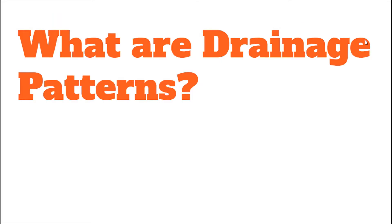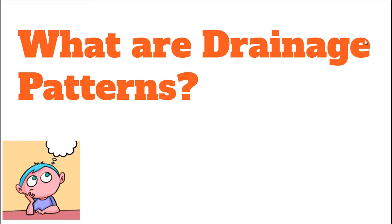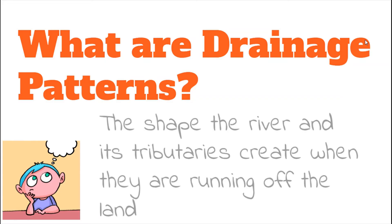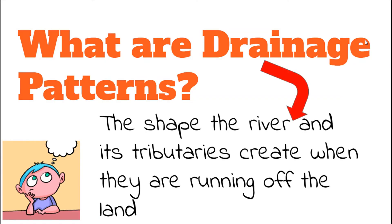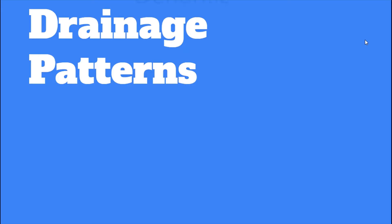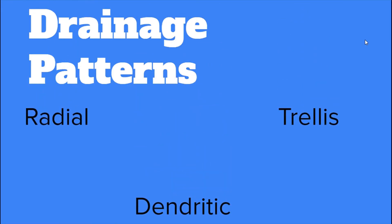So then this brings us to: what are drainage patterns? Patterns would be a shape. So we are looking at the pattern or the shape that the river and its tributaries create when they are running off the land. The pattern is usually formed as a result of the structure of the rocks in that specific drainage basin. Today, we will be looking at three types of drainage patterns: radial, dendritic, and trellis.